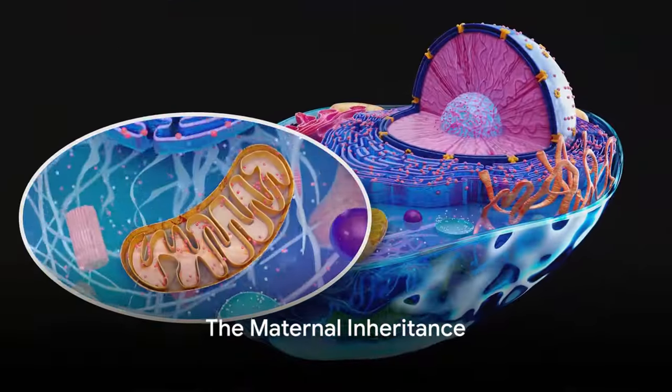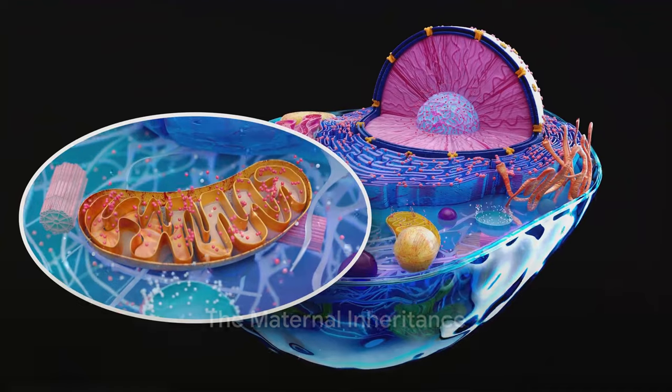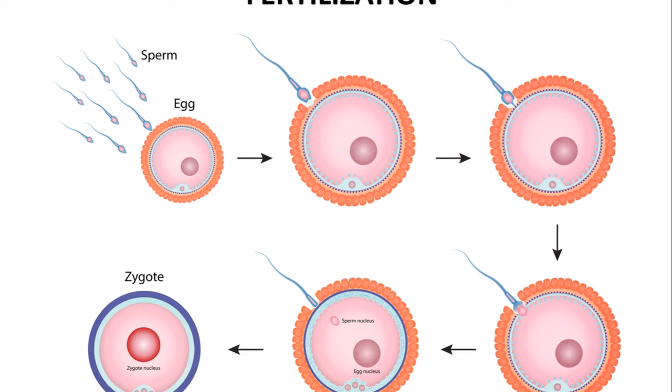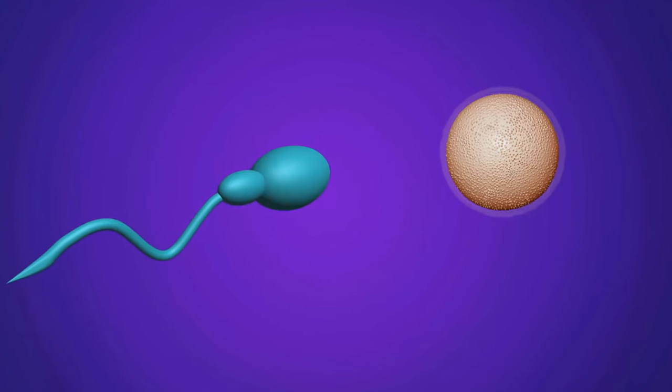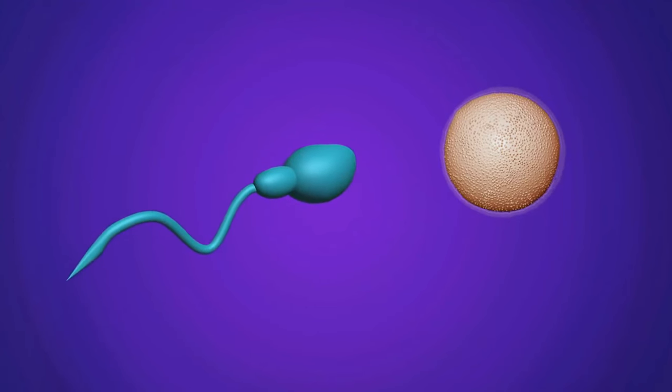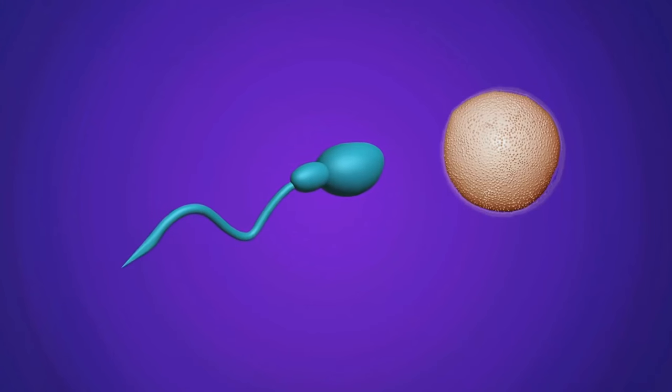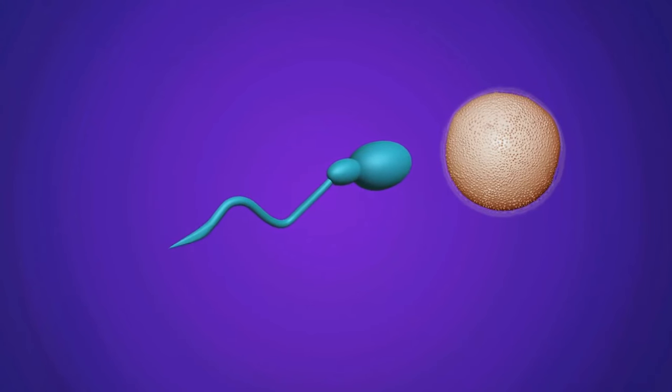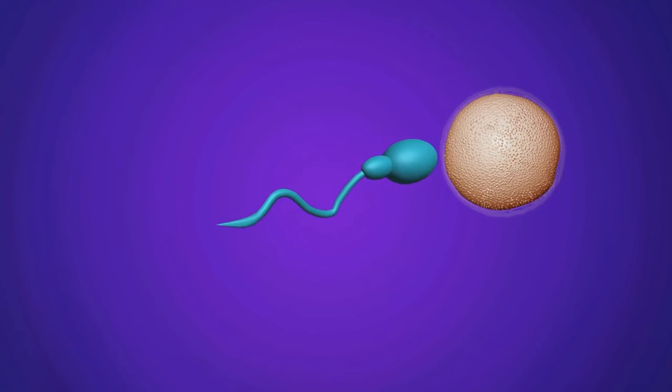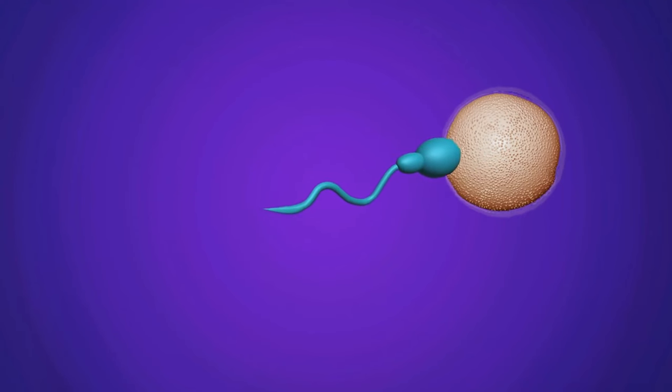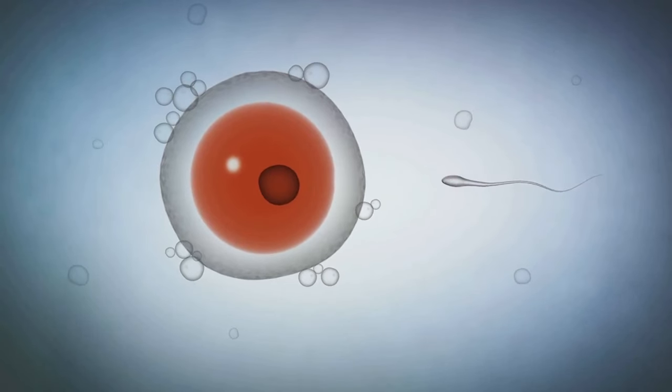So we've learned that mitochondrial DNA comes exclusively from our mothers. But why is that? Well, the answer lies in the unique process of fertilization. Picture this: a single egg from the mother, packed with all her mitochondria, and a lone sperm from the father, with just a handful of his own. When these two cells merge, a fascinating event occurs.